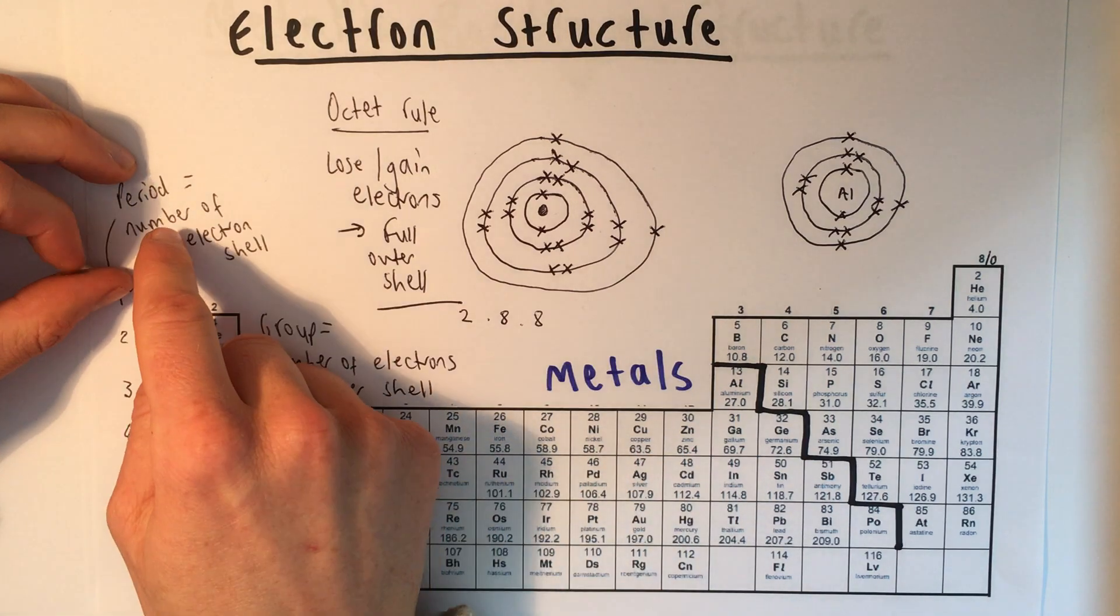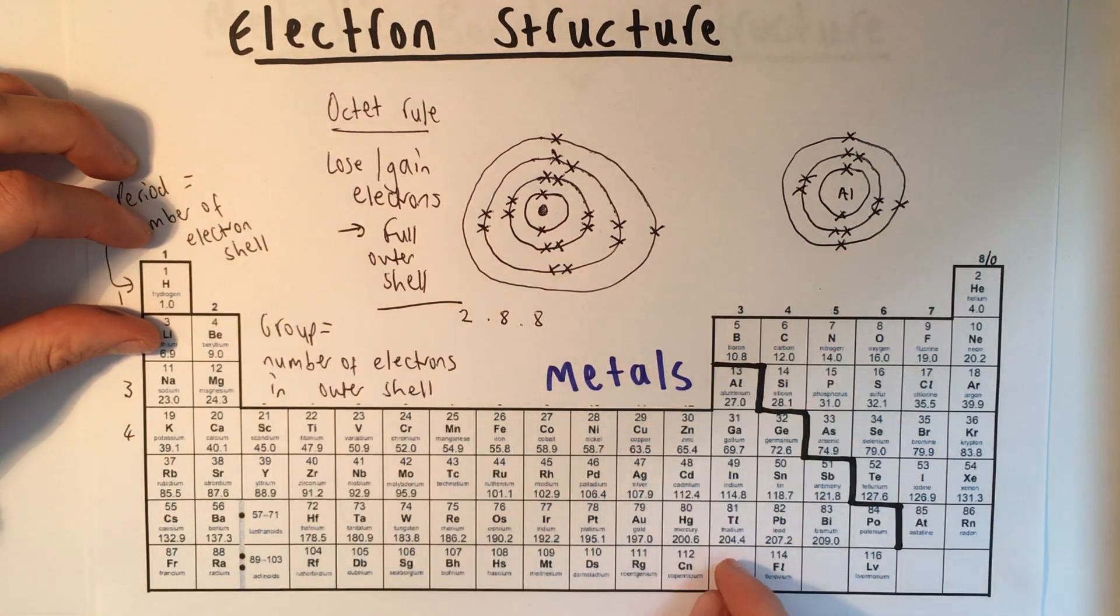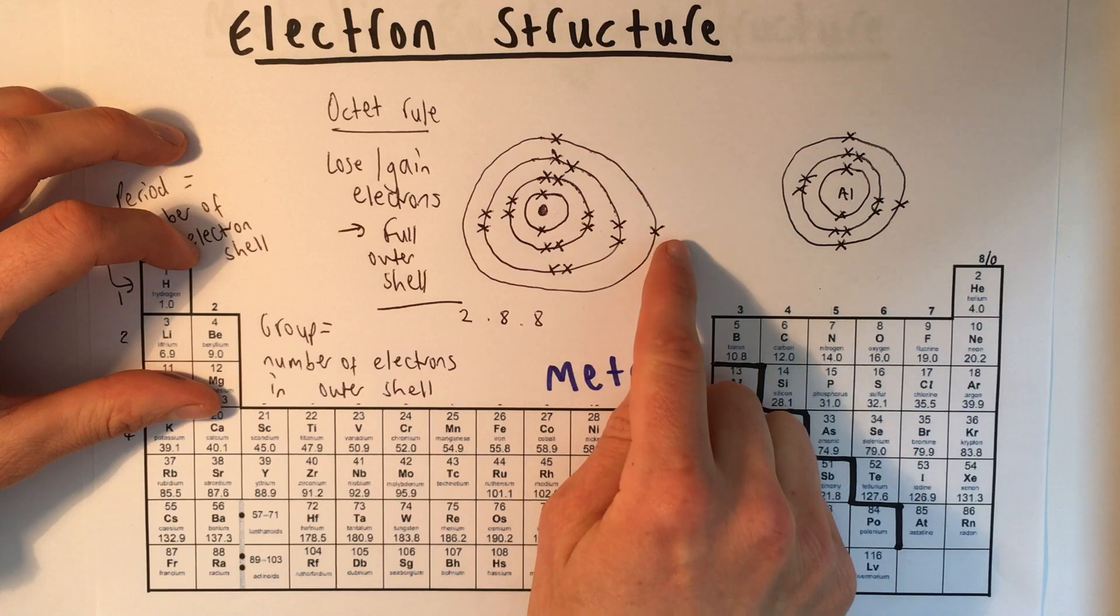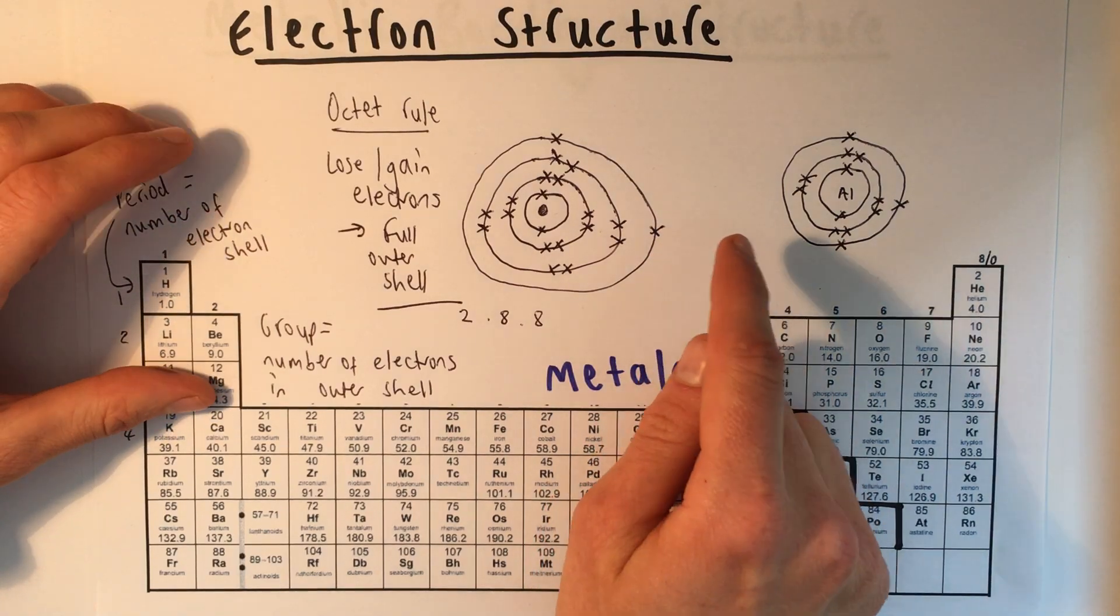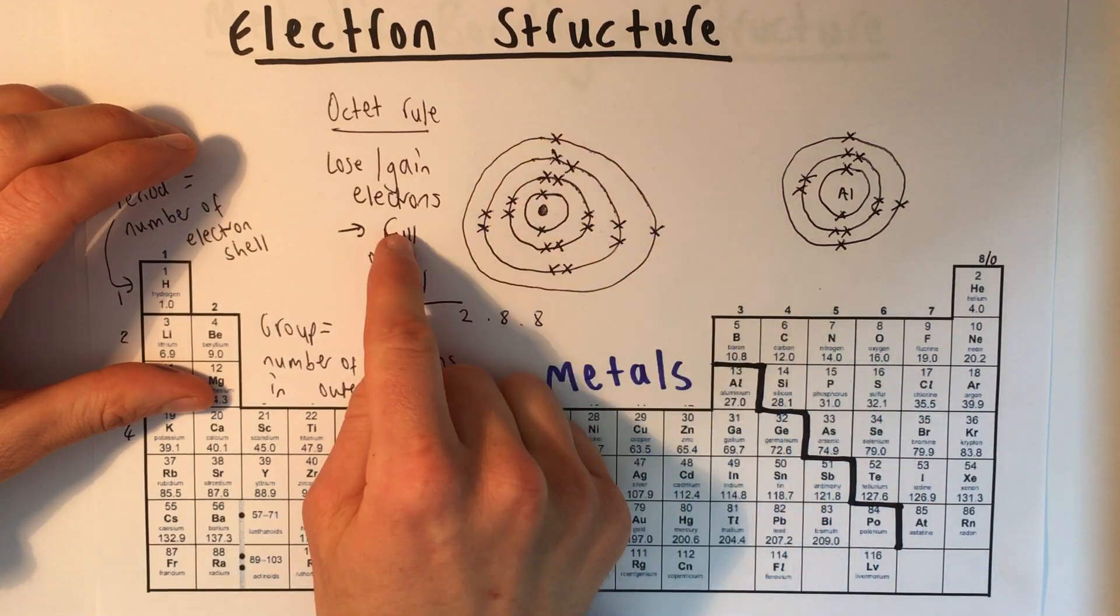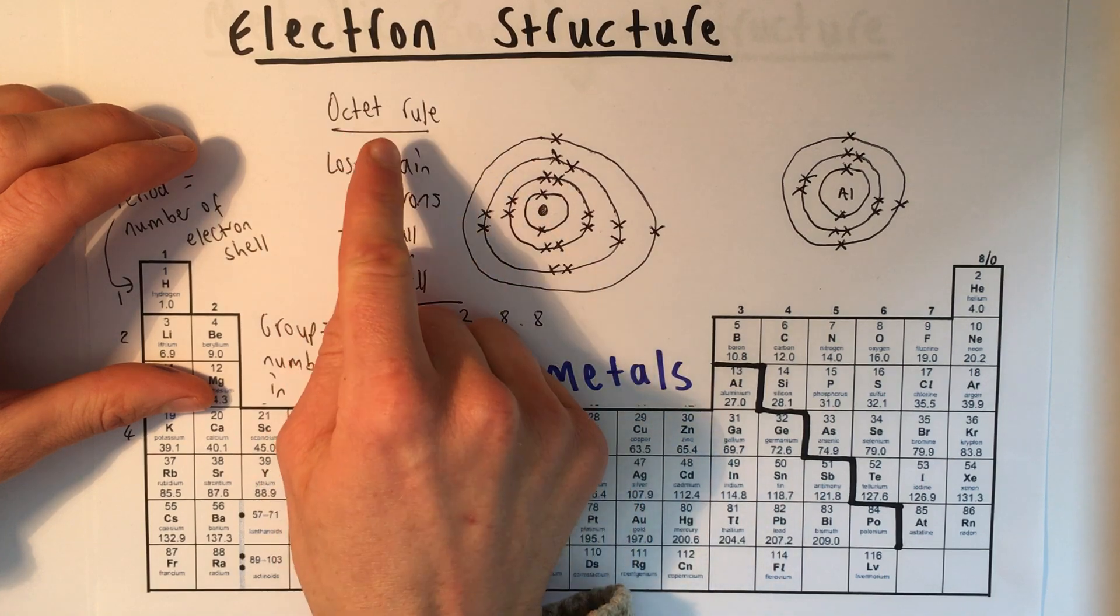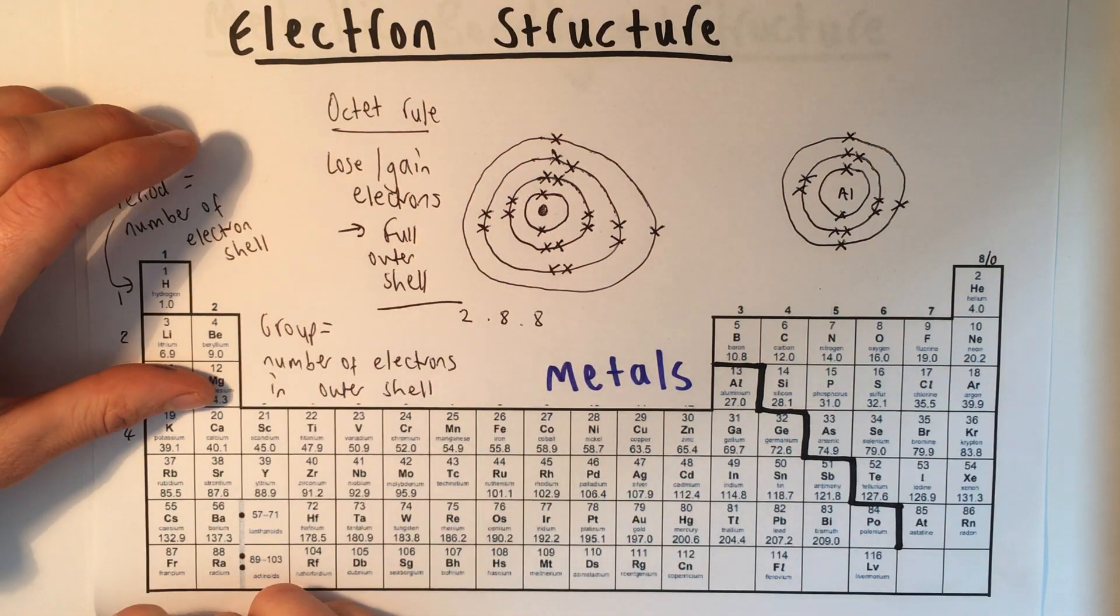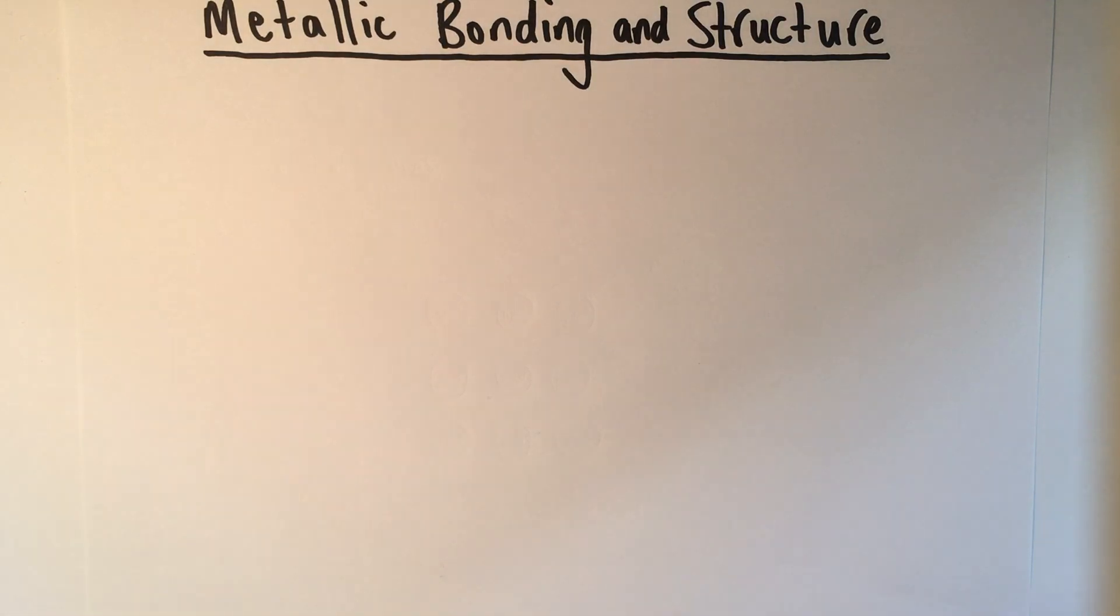Metals, which are in groups 1, 2, and some in group 3, have got more electrons in their outer shell than they want. They want to lose electrons to get a full outer shell. That's the octet rule that we looked at last time. So that's the first important thing to know about how metals bond.